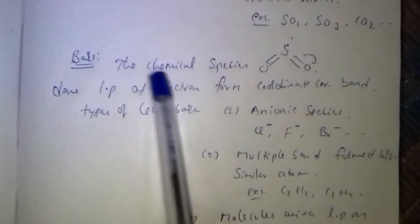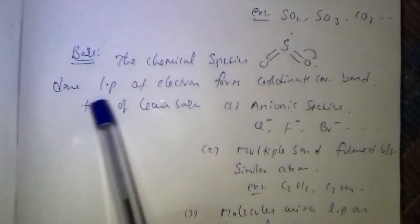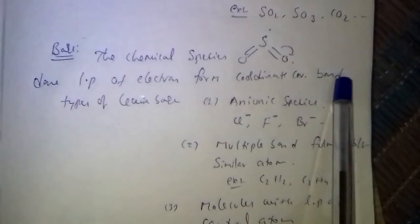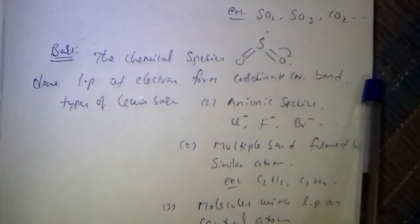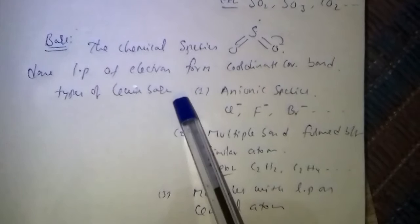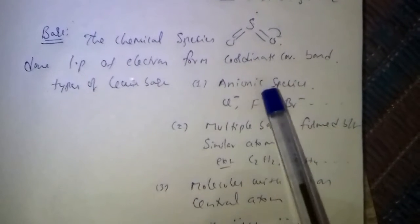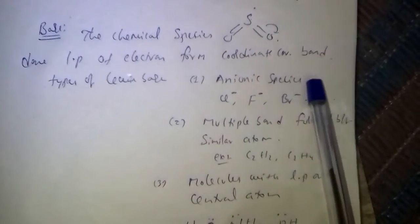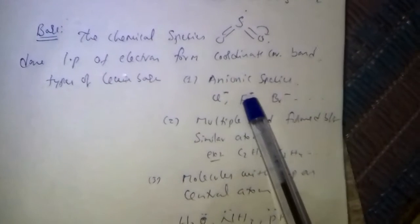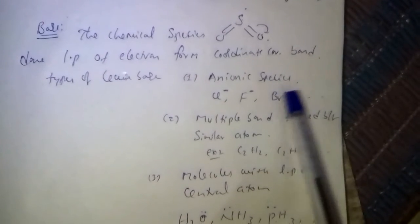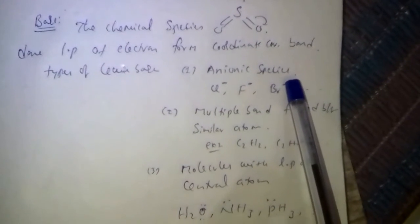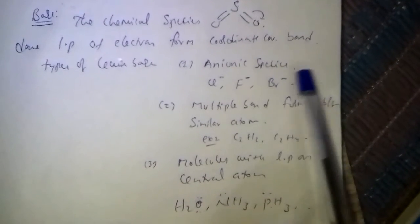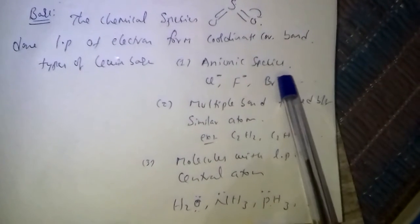Lewis Base: The chemical species which donates a lone pair of electrons to form a coordinate covalent bond is called a Lewis base. Types of Lewis bases: almost all anionic species — Cl⁻, F⁻, Br⁻ — contain lone pairs of electrons. They donate lone pairs and act as Lewis bases.